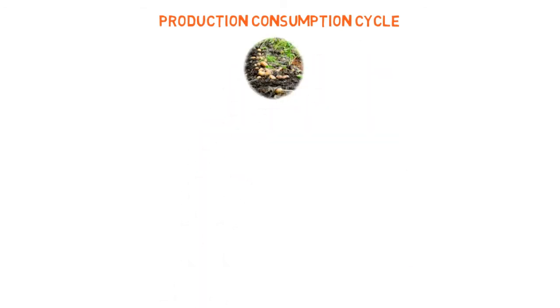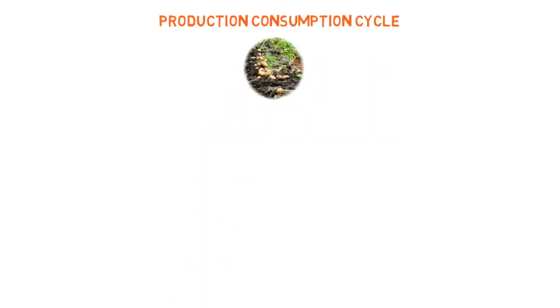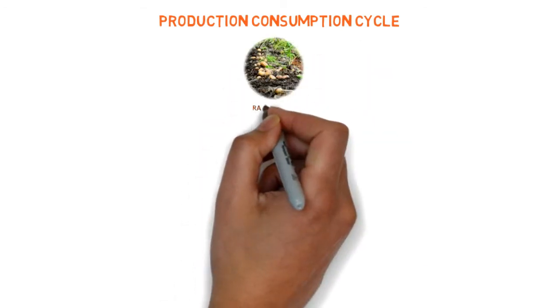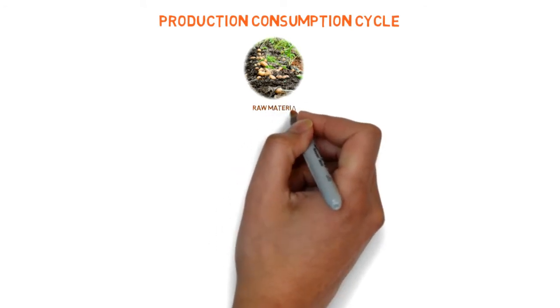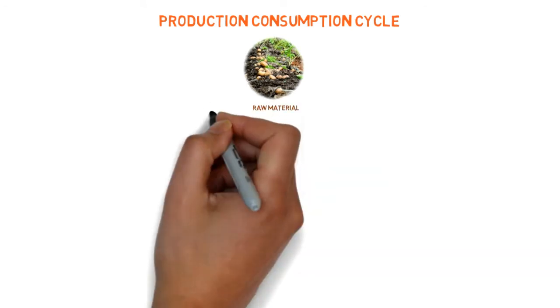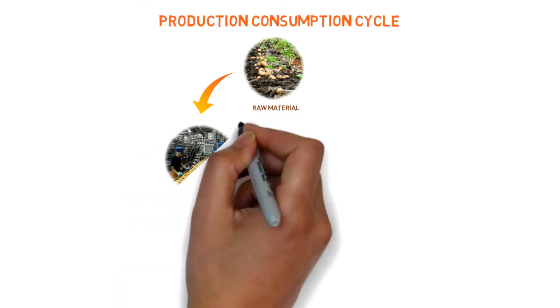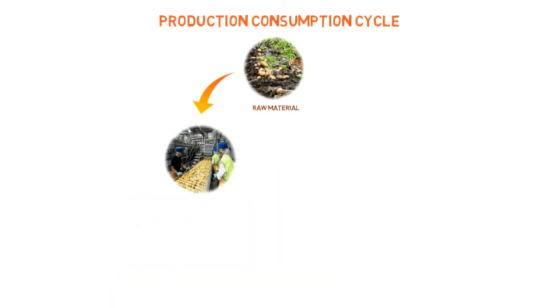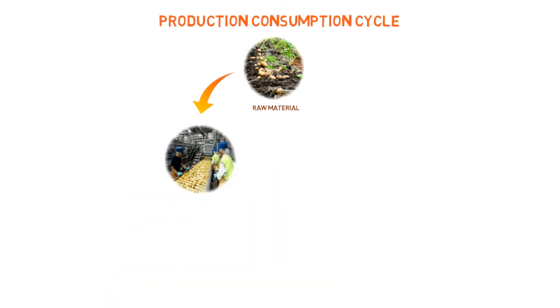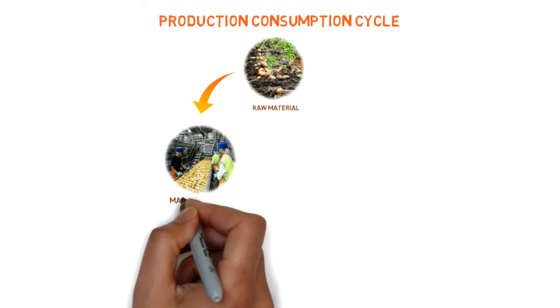Cultivation of potatoes is the main raw material. Lay's manufacturer treats the potatoes with chemicals to improve the color and taste. Potatoes are fried in palm oil. Cleaning, boiling, and adding some flavors to taste in manufacturing.